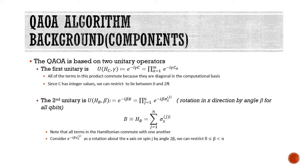Since the terms of these functions commute because they are diagonal on computational basis, and since C has integer values, we can restrict the angle to lie between 0 and 2π, which means gamma should lie between 0 and 2π. Similarly, for the second unitary operator which gives us a rotation about the x-axis, we define the parameter beta or the angle beta.